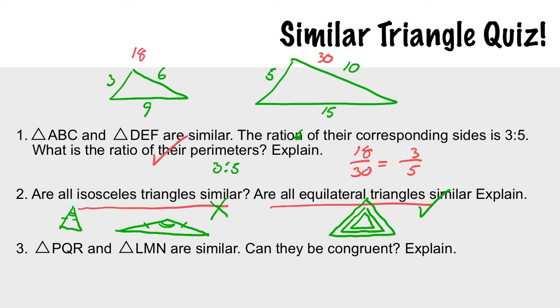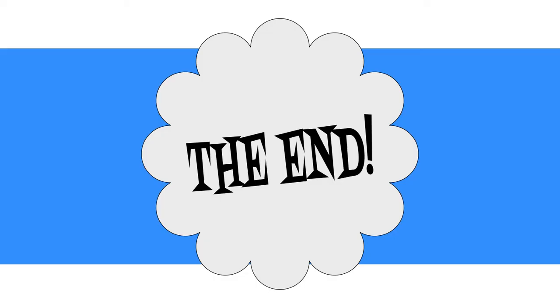Last one: PQR and LMN are similar. Can they be congruent? Yes, they're exactly the same thing. If I draw PQR and LMN right on top of each other—same angles, same side lengths—they have a one-to-one ratio. Thanks for listening.